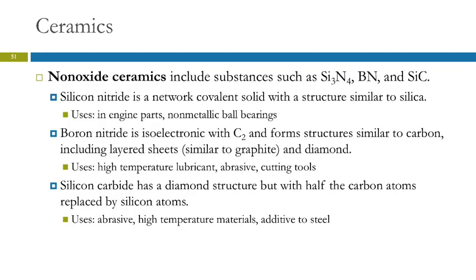Then there are non-oxide ceramics — these don't have oxygen in them. Silicon nitride is a network covalent solid, but instead of oxygen we have nitrogen atoms. This is useful in engine parts. You can make ball bearings that are not metallic — instead of the little metal marbles you typically picture, these would not be metallic.